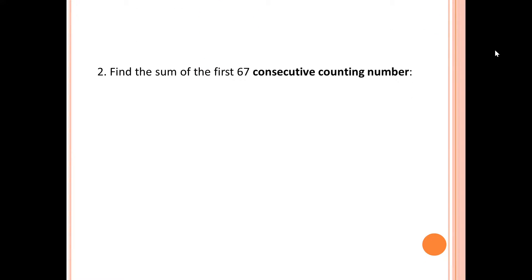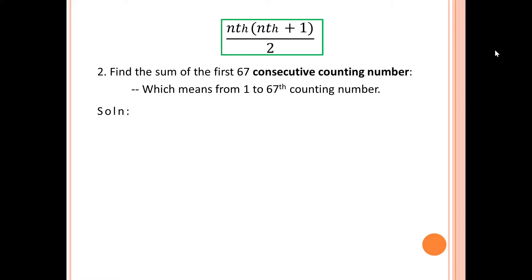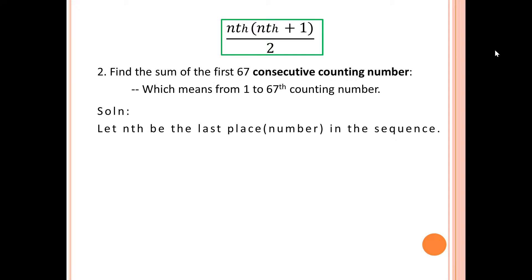Let us have the second problem: find the sum of the first 67 consecutive counting numbers. When we say the first 67 consecutive counting numbers, it means from 1 to 67. We're going to add from 1, 2, 3 up to the 67th counting number. The 67th counting number is also the same as the number 67. We use the formula n(n+1)/2, where n is the last place number in the sequence.